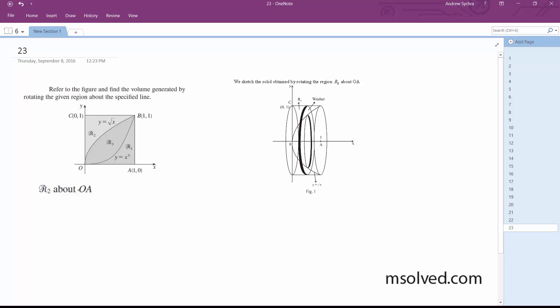Alright, so in this case, the initial setup A(x) is going to be pi times (1 minus square root of x) squared. So A(x) is going to be equal to pi times (1 minus x). Actually pretty nice.